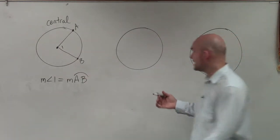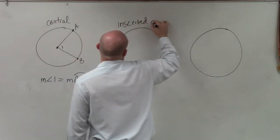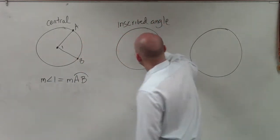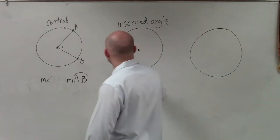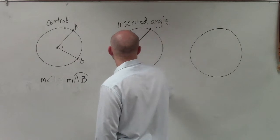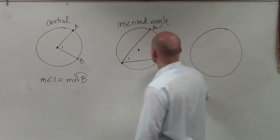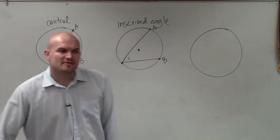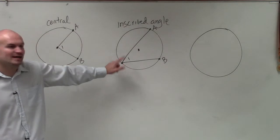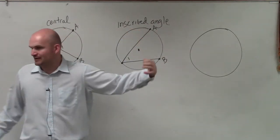The next thing we learned was what we call an inscribed angle. And an inscribed angle didn't have the vertex at the center, but it had the vertex on a point of the circle. So now, if you have a vertex on the point of the circle, this is what we went over last class period, then to find the measure of angle 1, it wasn't what the arc of A B was. It was half the arc of A B.